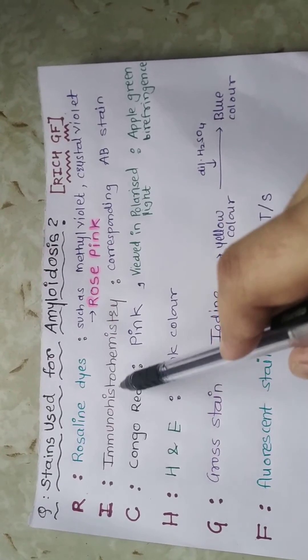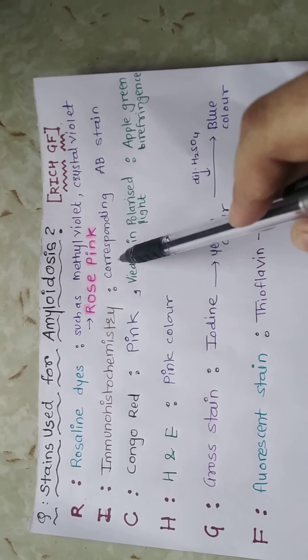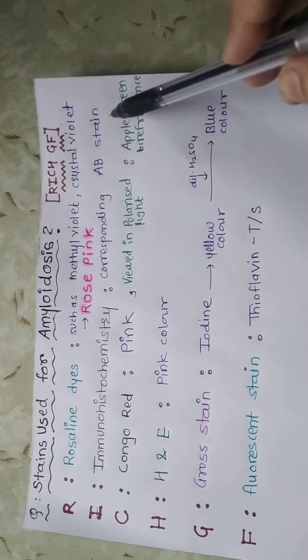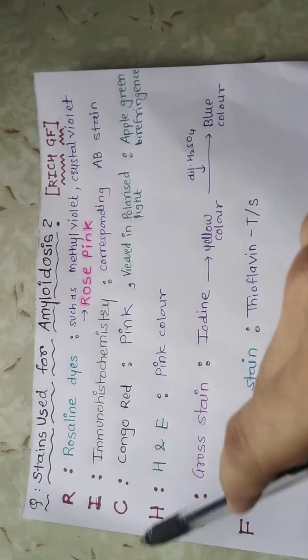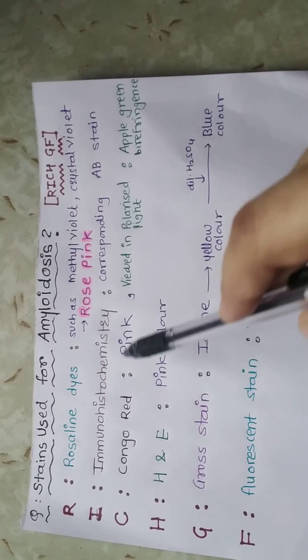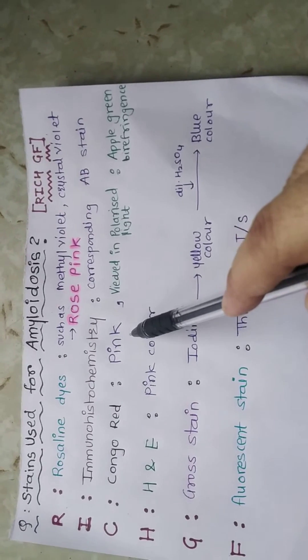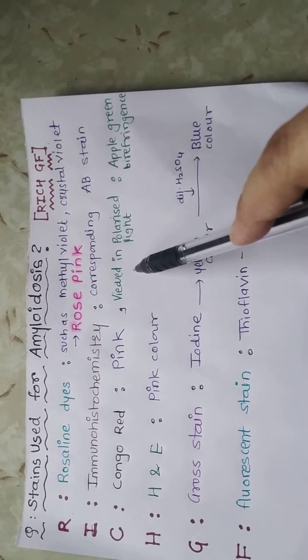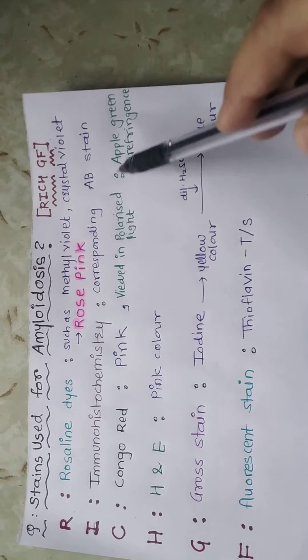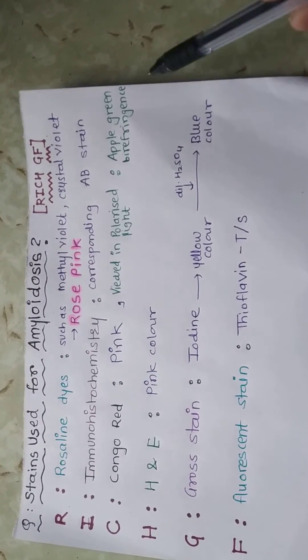I for immunohistochemistry - corresponding antibodies are used as a stain. C for Congo red which gives pink color, and when viewed in polarized light it gives apple green birefringence.